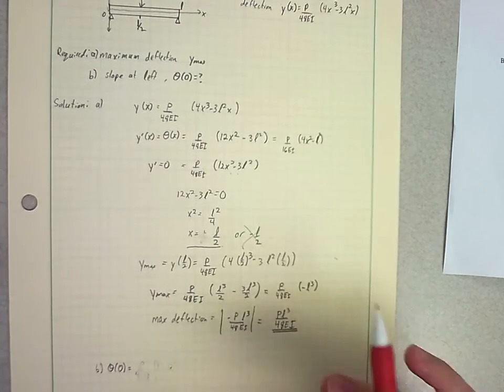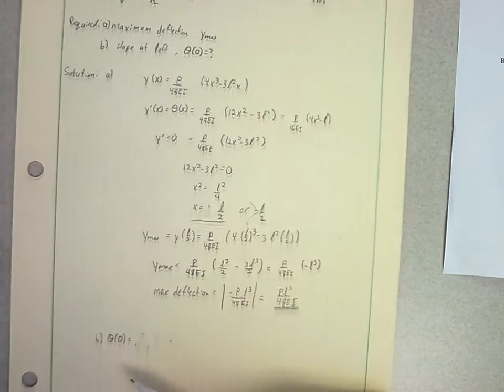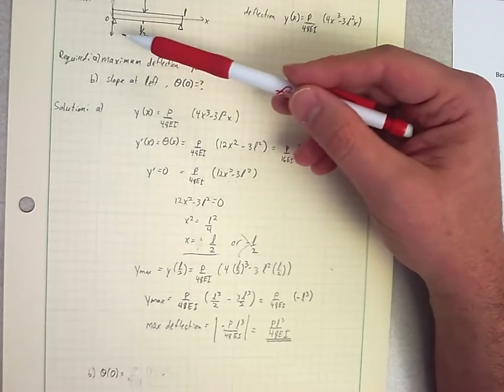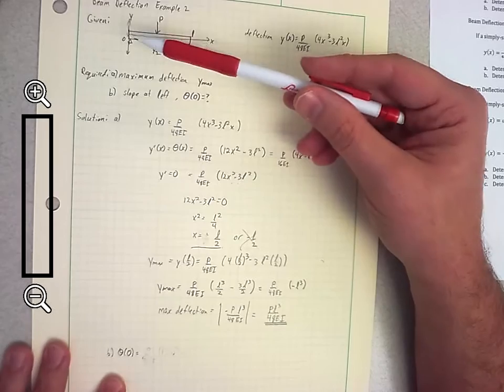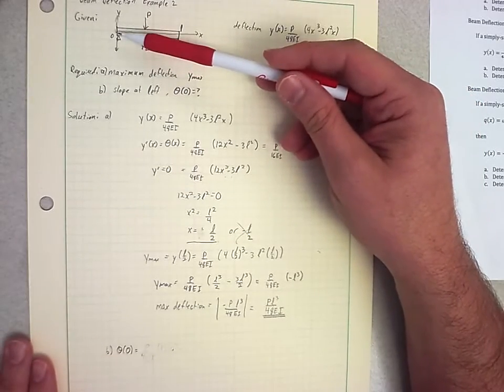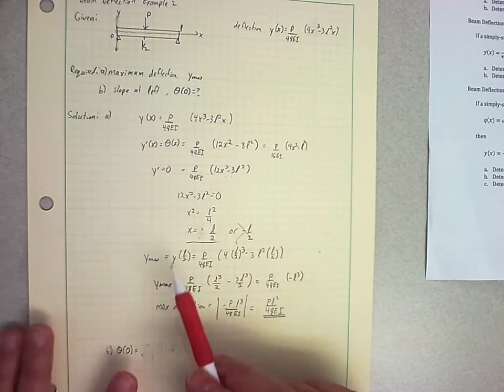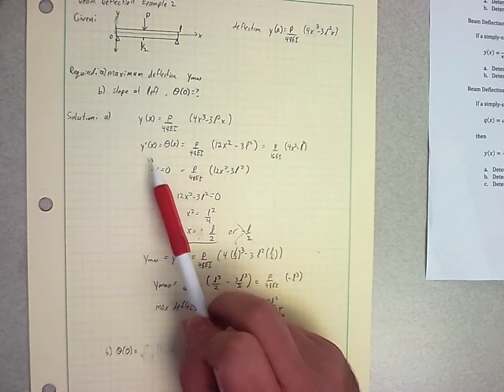Okay, so that gets my maximum deflection. Moving on to part B, I want to know what is the slope at the left. So remember the left is, maybe I'll zoom out a little bit so I don't have to keep jumping back and forth. The left is all the way over here where we started at 0. So I just need to know the theta at 0. I've already found my expression for theta because I had to take the derivative along the way.